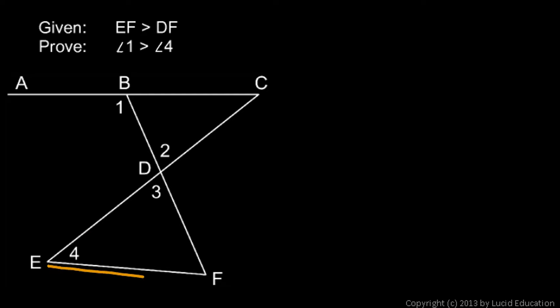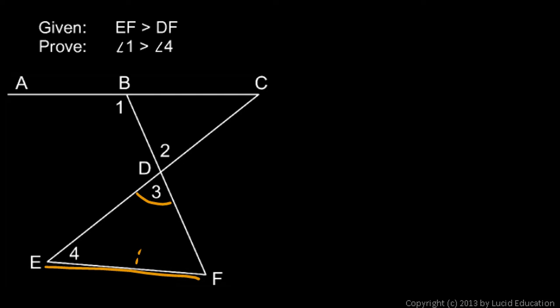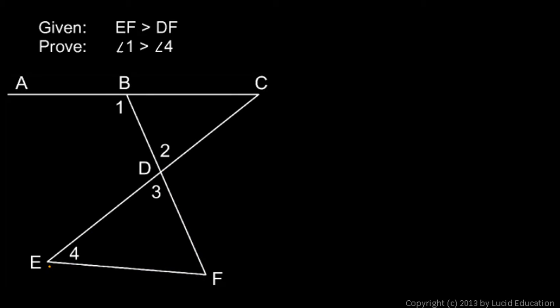Let's think about this. EF is greater than DF. Remember the theorem that says if the sides of a triangle are unequal, then the angles opposite those sides are also unequal, and the larger angle will be opposite the larger side. Note that angle 3 is directly opposite EF, and angle 4 is directly opposite DF. So if EF is greater than DF, angle 3 must be bigger than angle 4.